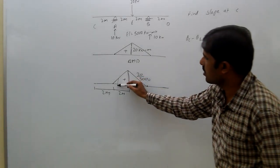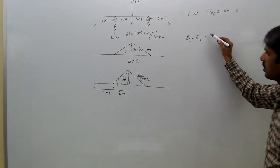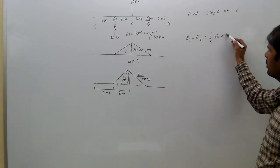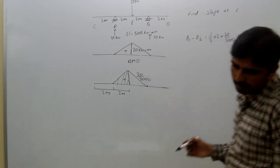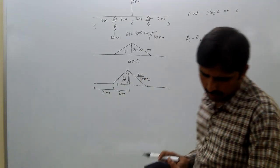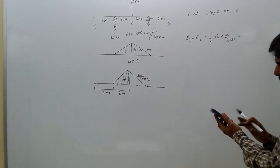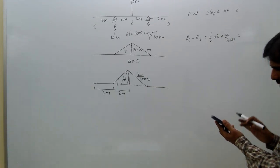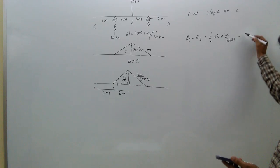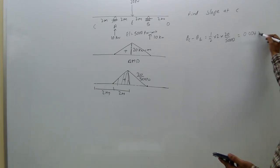That means area, this area: half into 2 into 20 by 5000, that equal to 20 by 5000, 0.004 radians.